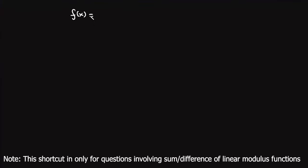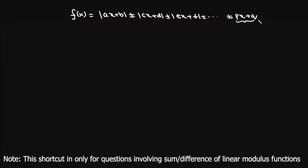There is a shortcut in modulus functions which is being extensively used in a wide variety of problems. Typically such questions involve a function f(x) which is a combination of linear polynomial and linear modulus functions — of the form ±|ax+b| ± |cx+d| ± |ex+f| and so on, plus some linear polynomial px+q. Such functions appear in equations, inequalities, continuity, differentiability, integral calculus, and graphs. The shortcut is to draw the graph of this function in a very simple way.